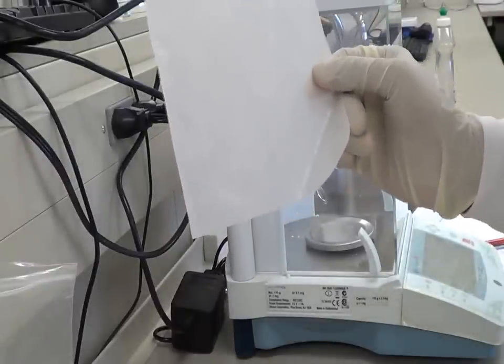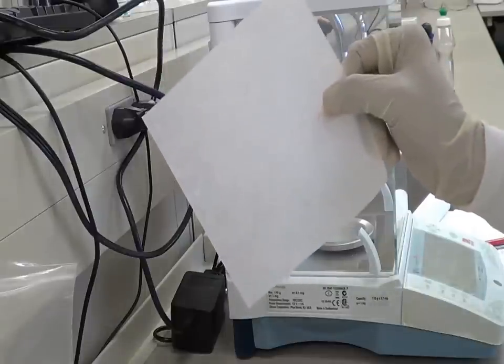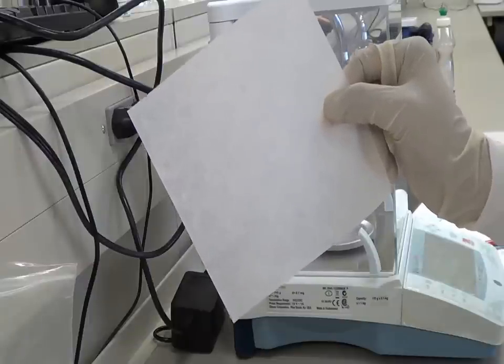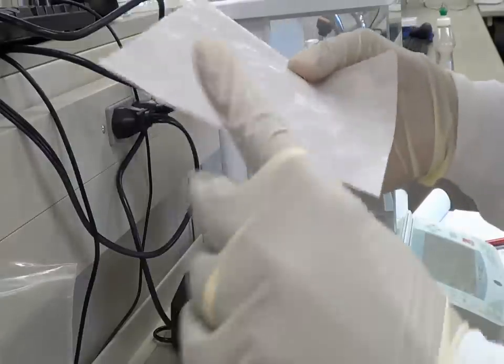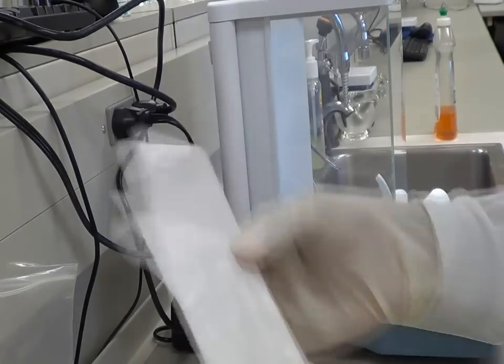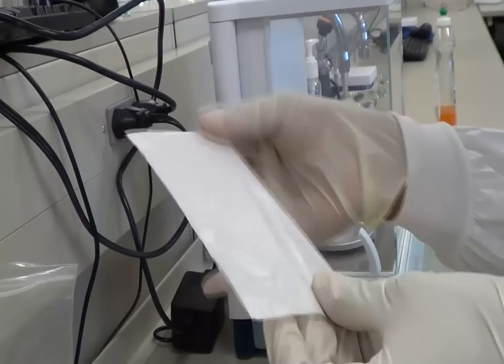This weighing paper is actually too big if you want to weigh like 100 mg or any grams. So what you do is you just fold it and tear it apart into four pieces, four equal pieces like this.